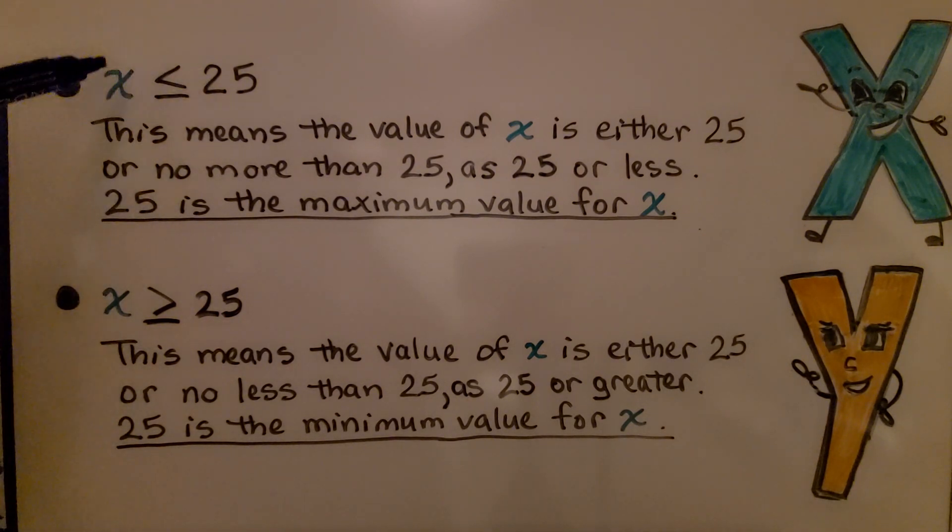It can't be any more than that because x is less than that. If we see a variable is greater than or equal to 25, well this means the value of x is either 25 or no less than 25 as 25 or greater. 25 is the minimum value for x.